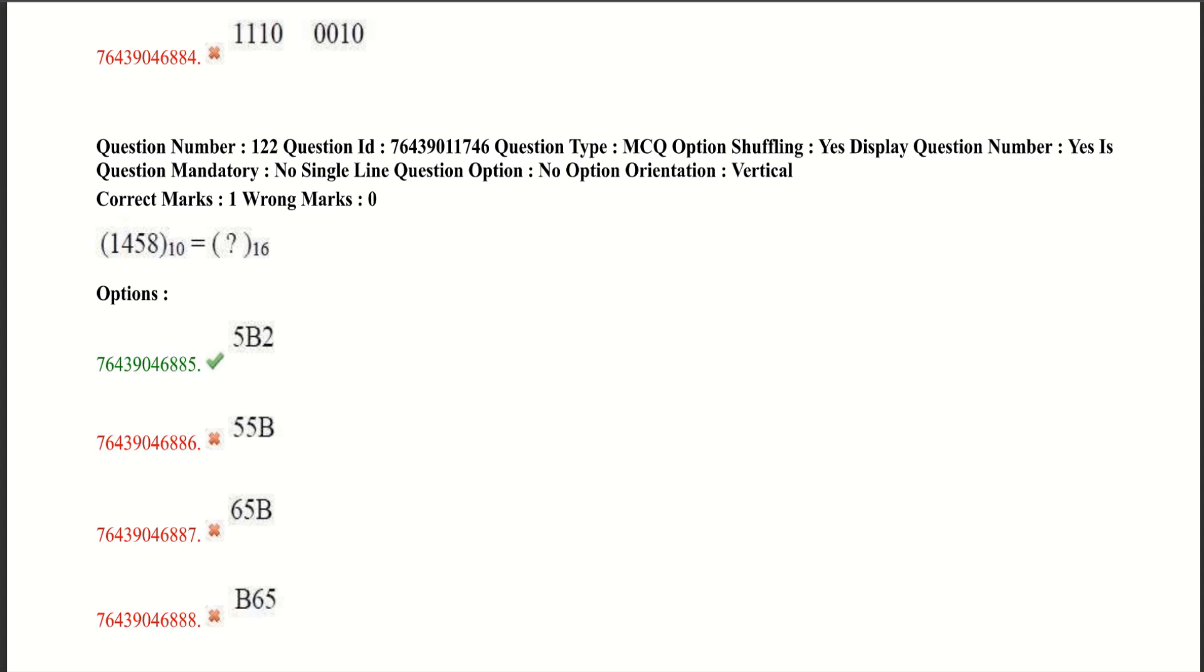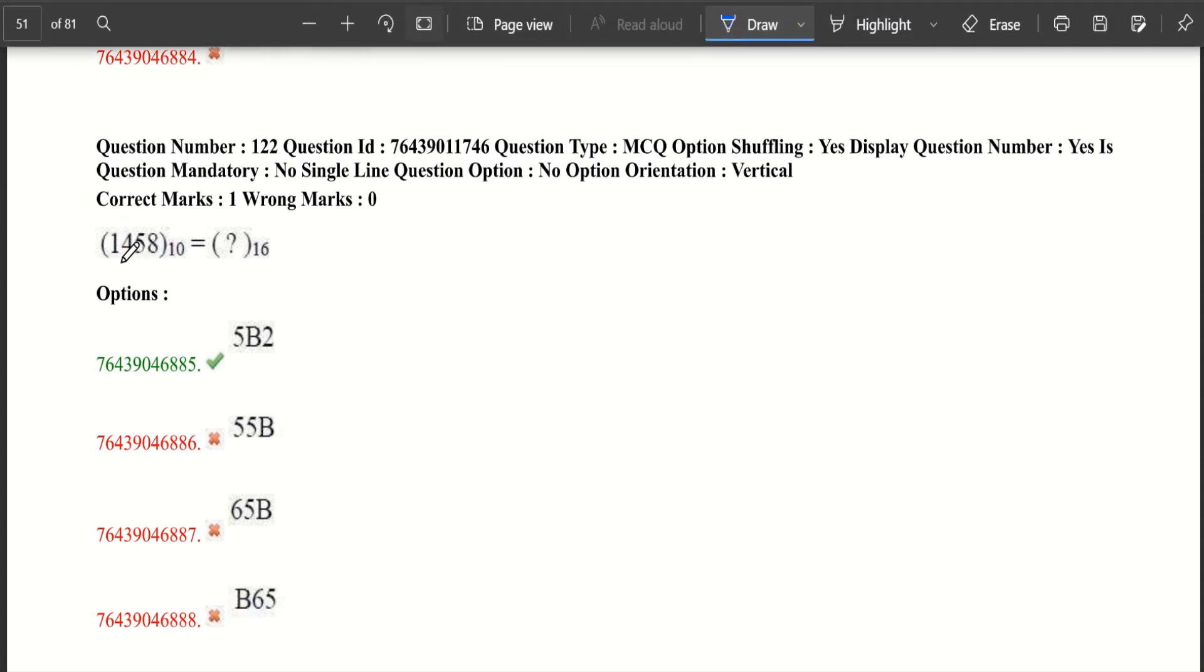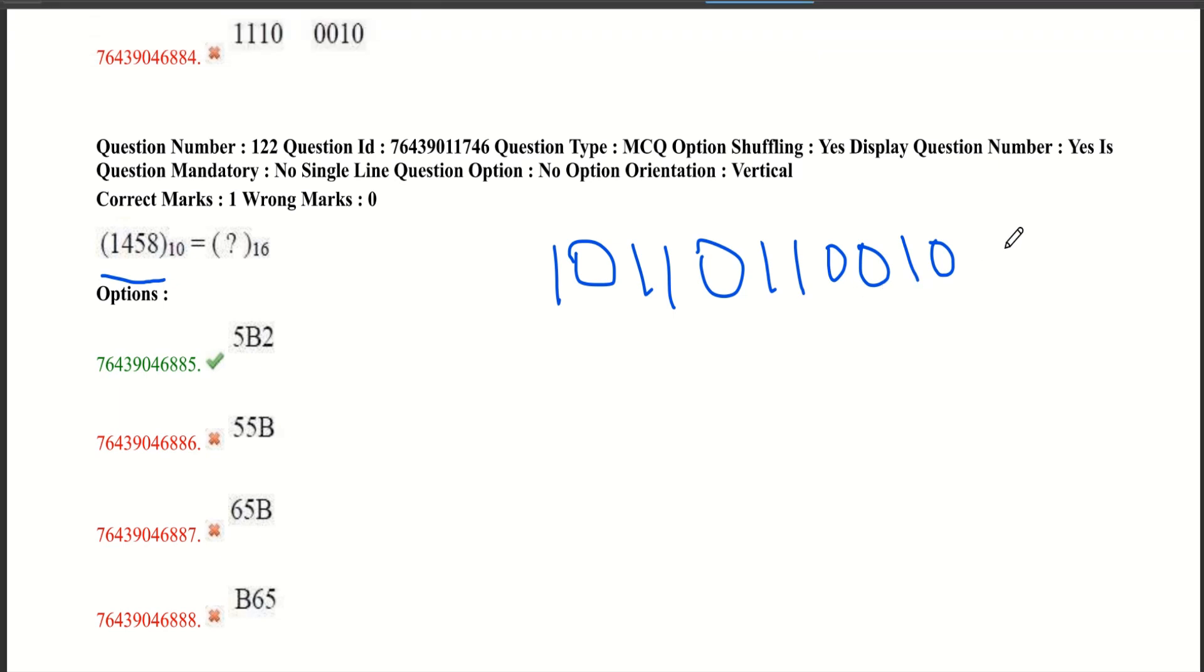Now let's move to our next question. Here it is given a decimal value and asked to convert into hexadecimal. In this kind of questions, we have to first convert this decimal value into binary value. Let's convert it. After conversion into binary, we get this and now we have to convert this into hexadecimal.